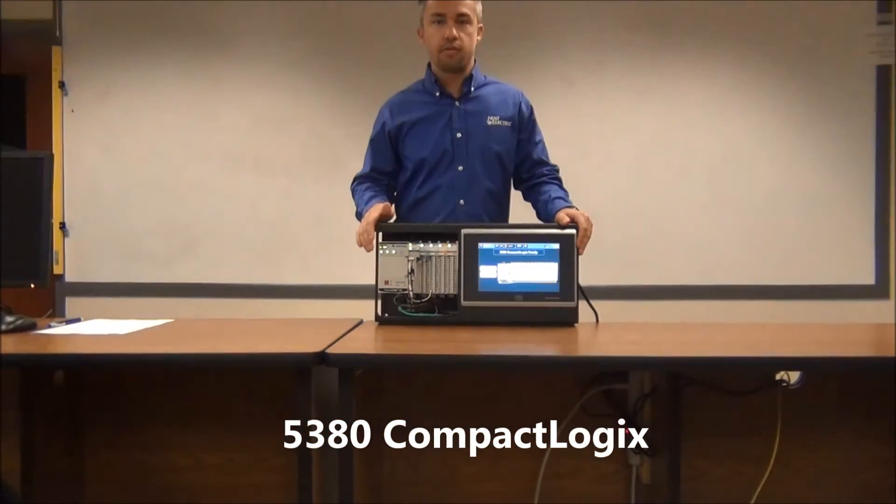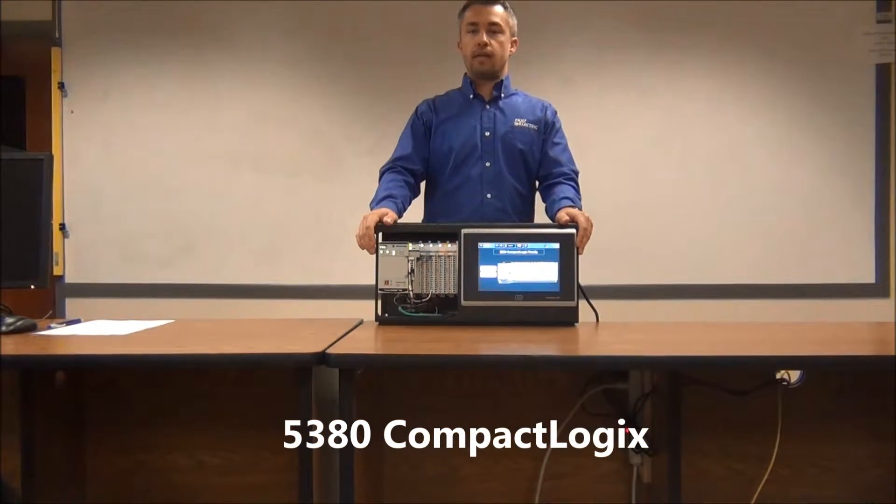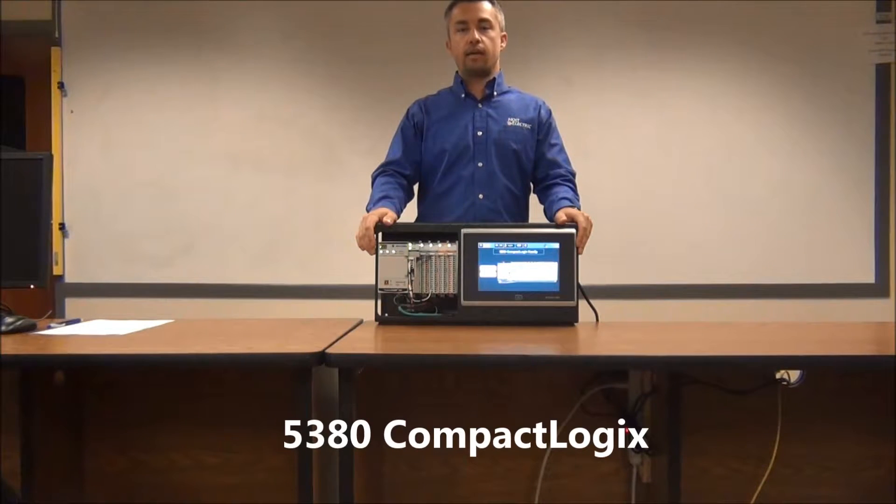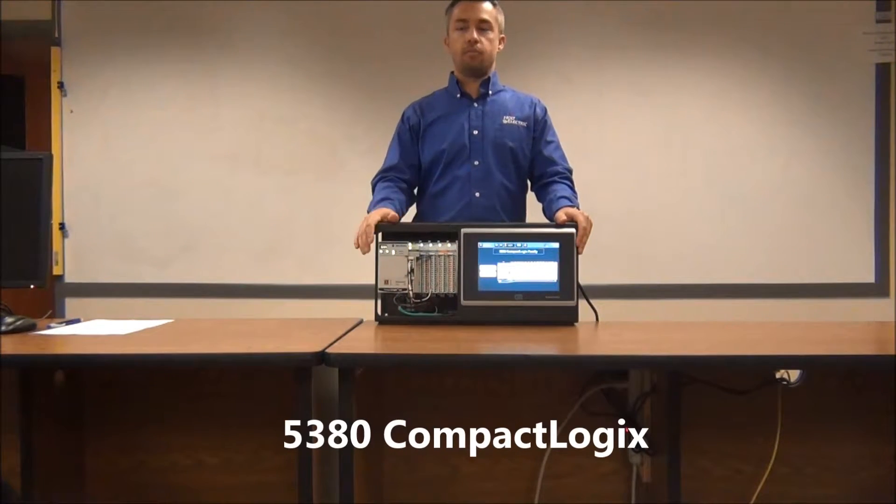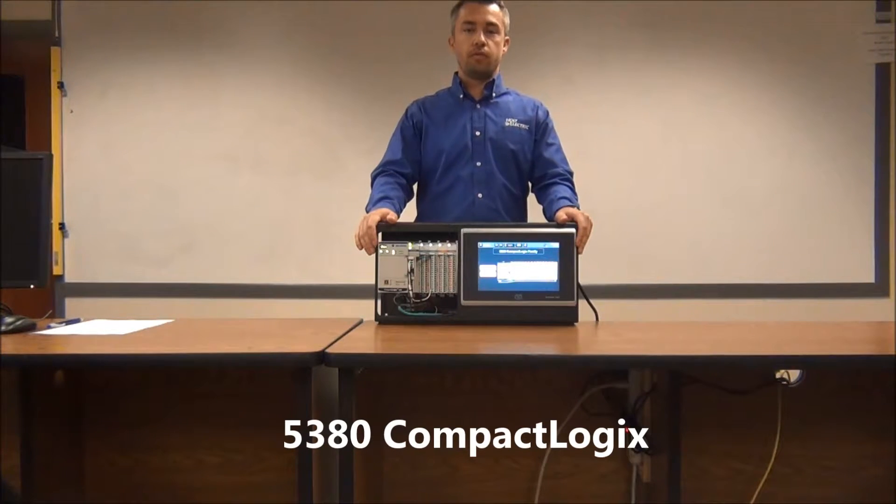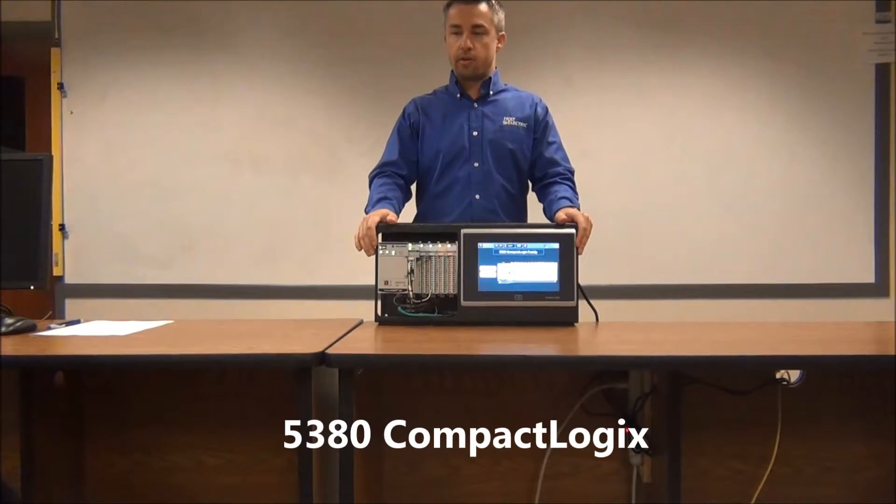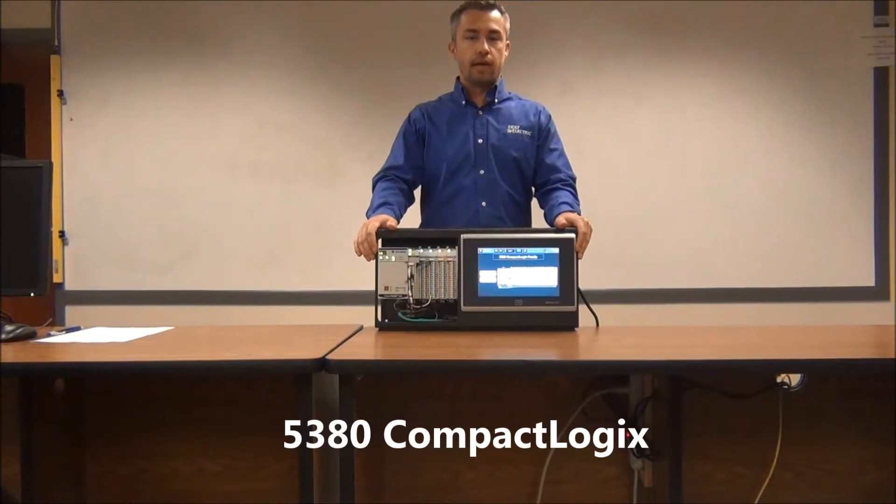You'll notice next to the controller, there's a new form of I/O. This is the high-speed 5069 I/O with a gigabit backplane. The new high-speed backplane means this processor is now capable of doing things like event-driven interrupts, which is great for high-speed discrete manufacturing.